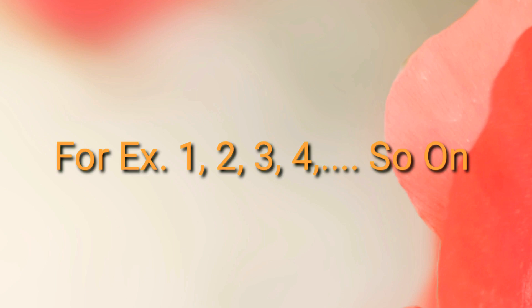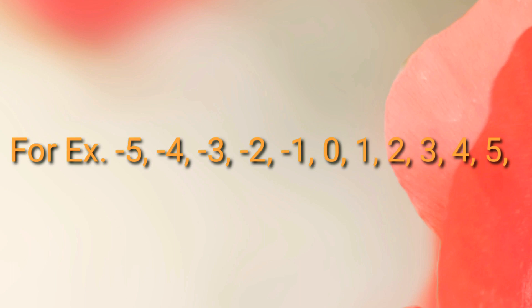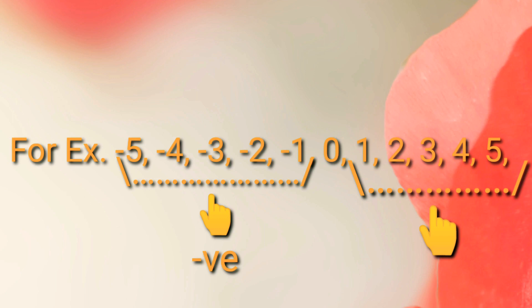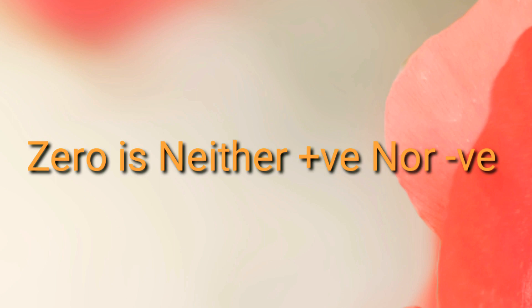After this come integers. Integers are the collection of all natural numbers, negative numbers, and 0. In simple language, integers are the collection of whole numbers and negative numbers. One more thing — 0 is neither positive nor negative; it is neutral because it does not have any sign.